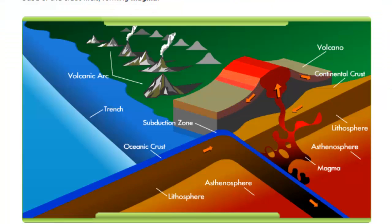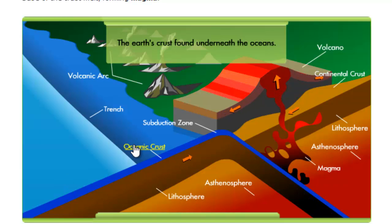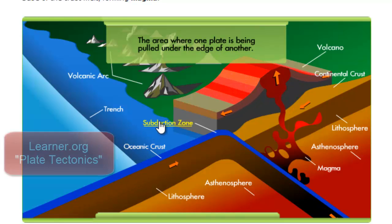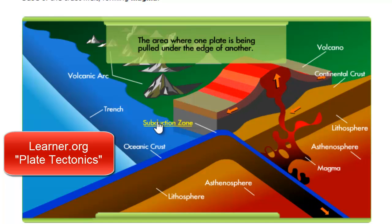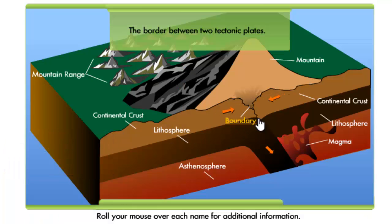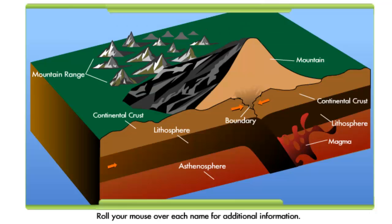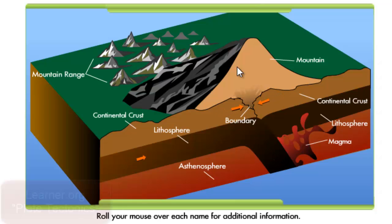In this animation you can see convergent boundaries, or colliding plates, and you can put your mouse over each one of the labels to tell you a little bit more about that action going on at that boundary. Here's a convergent boundary where two continental crusts are colliding, and we have the formation of a mountain or mountain ranges.